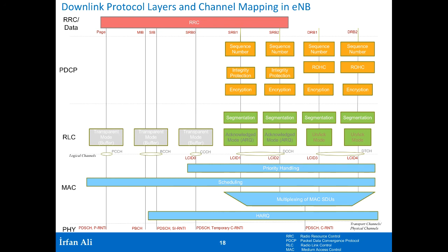This is the overall structure of how the various protocol layers look and the functionality they provide at the downlink level. The important point is that PDCP entities and RLC entities are independent for each radio bearer, and there are multiple of them depending on how many data radio bearers are configured.